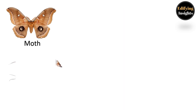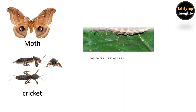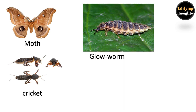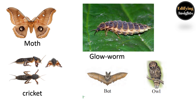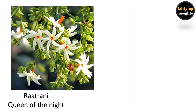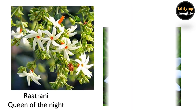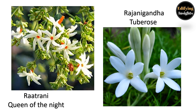Some nocturnal animals set out to search for food after the sunset. Moths, crickets, and glowworms are some such animals. Tigers, bats, and owls are also nocturnal animals. Ratrani (queen of the night) and Rajnigandha (tuberose) are flowers that bloom at night.